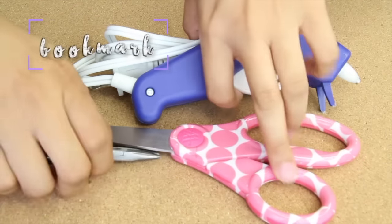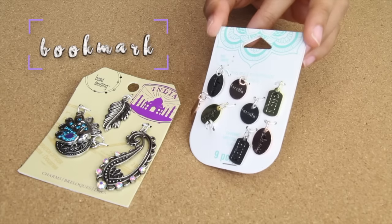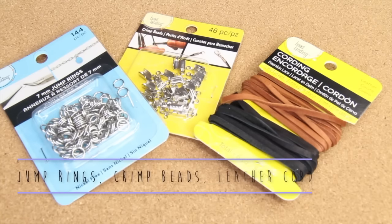Now it's time to make a bookmark - these are really easy and cute. I have some necklace charms that I found at the craft store, jump rings, crimp beads, as well as leather cord.